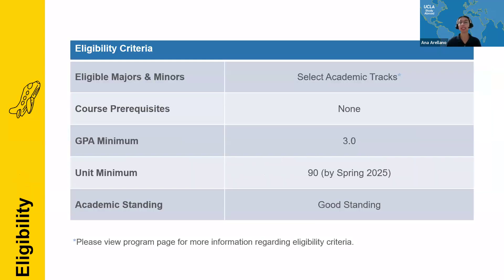Regarding eligibility: some academic tracks are open to majors and minors only, so check the program pages for any restrictions. There are no course prerequisites. You must have a 3.0 cumulative GPA, 90 units by spring 2025, and be in good academic standing. If you are a first-year or transfer student without an established UC GPA, that's okay — in January we will conduct a second eligibility check to verify your fall GPA meets the 3.0 requirement. For the 90-unit requirement, we accept transfer credits, including community college coursework and AP course credit on your UCLA record.